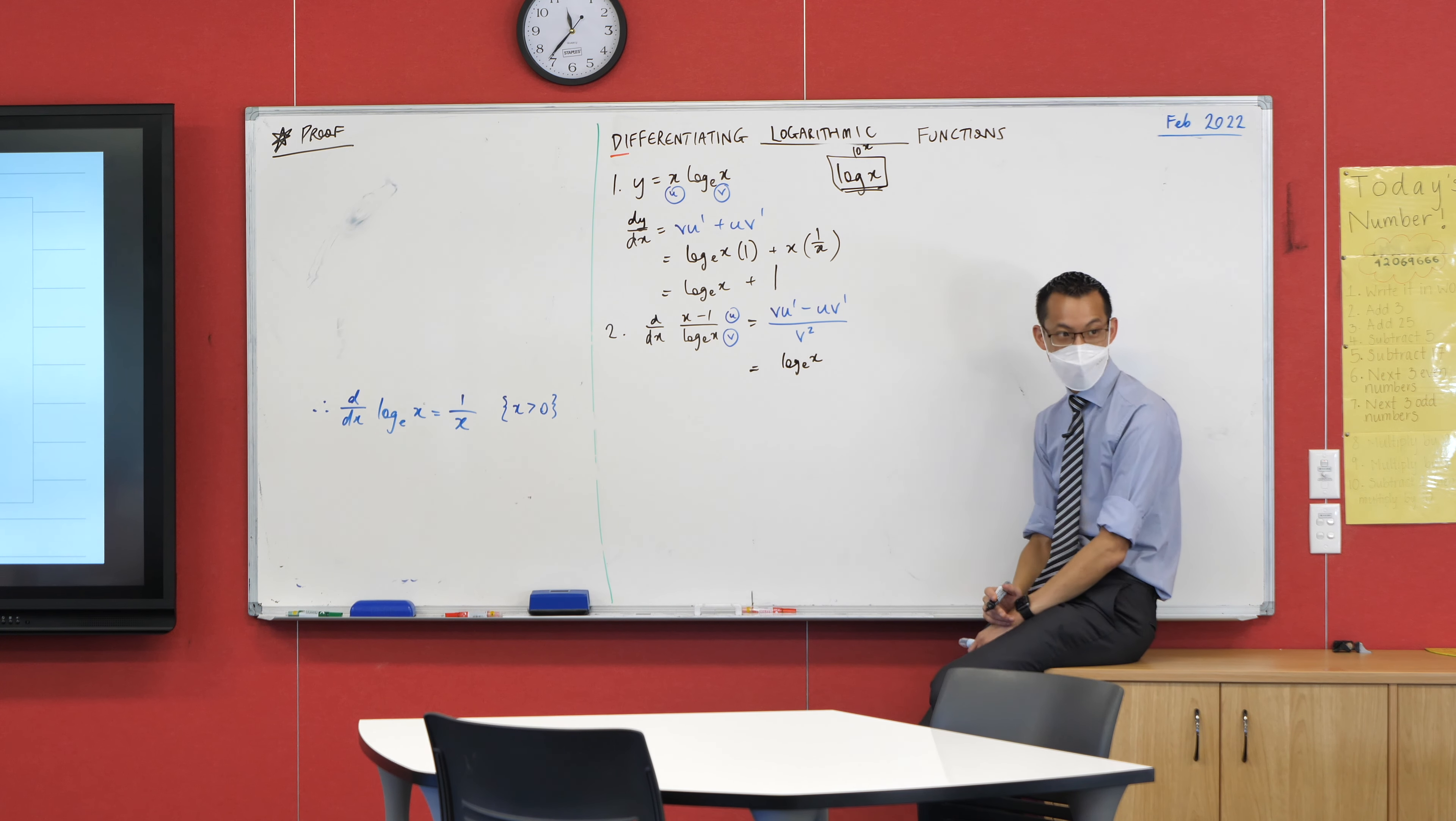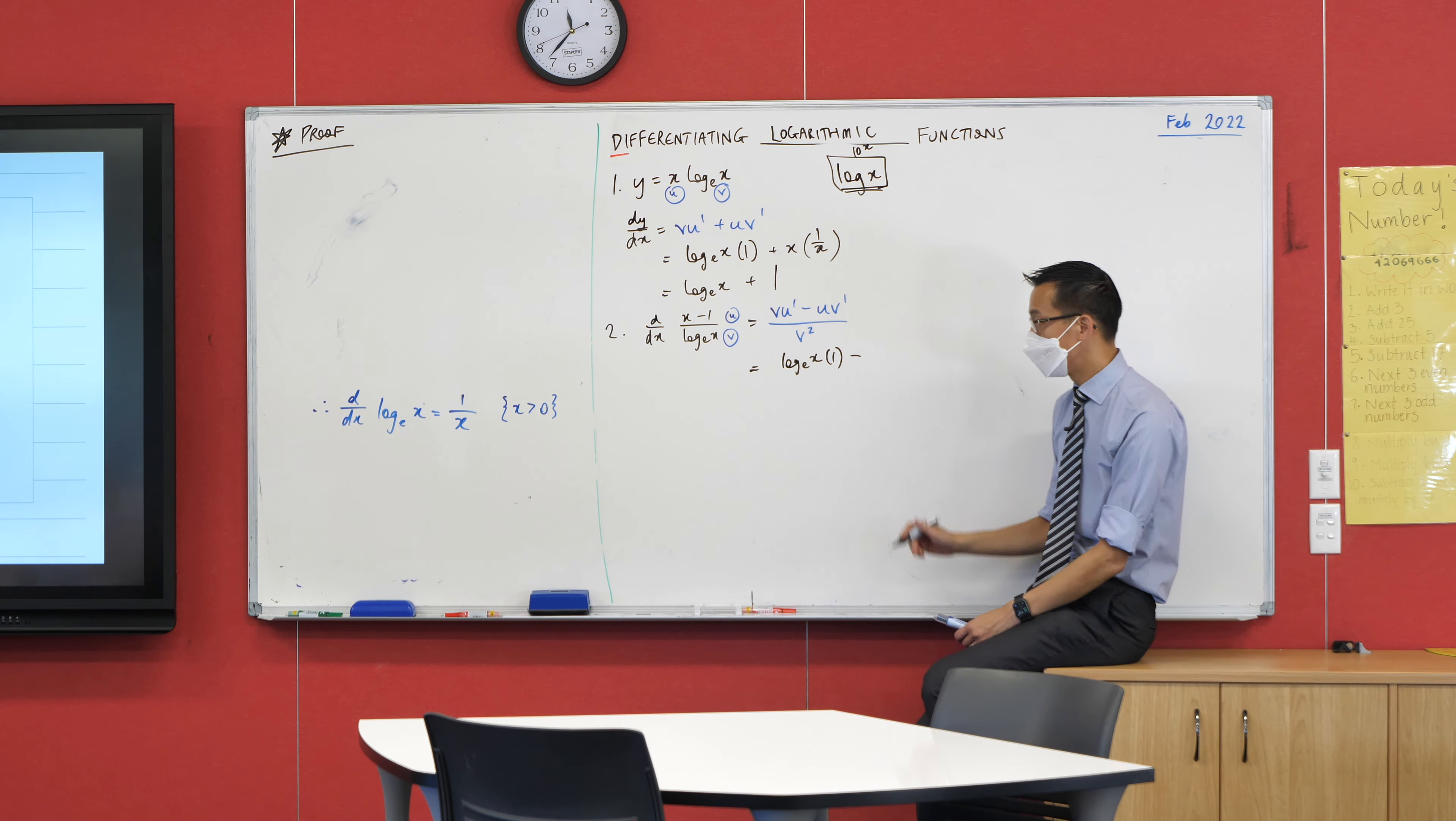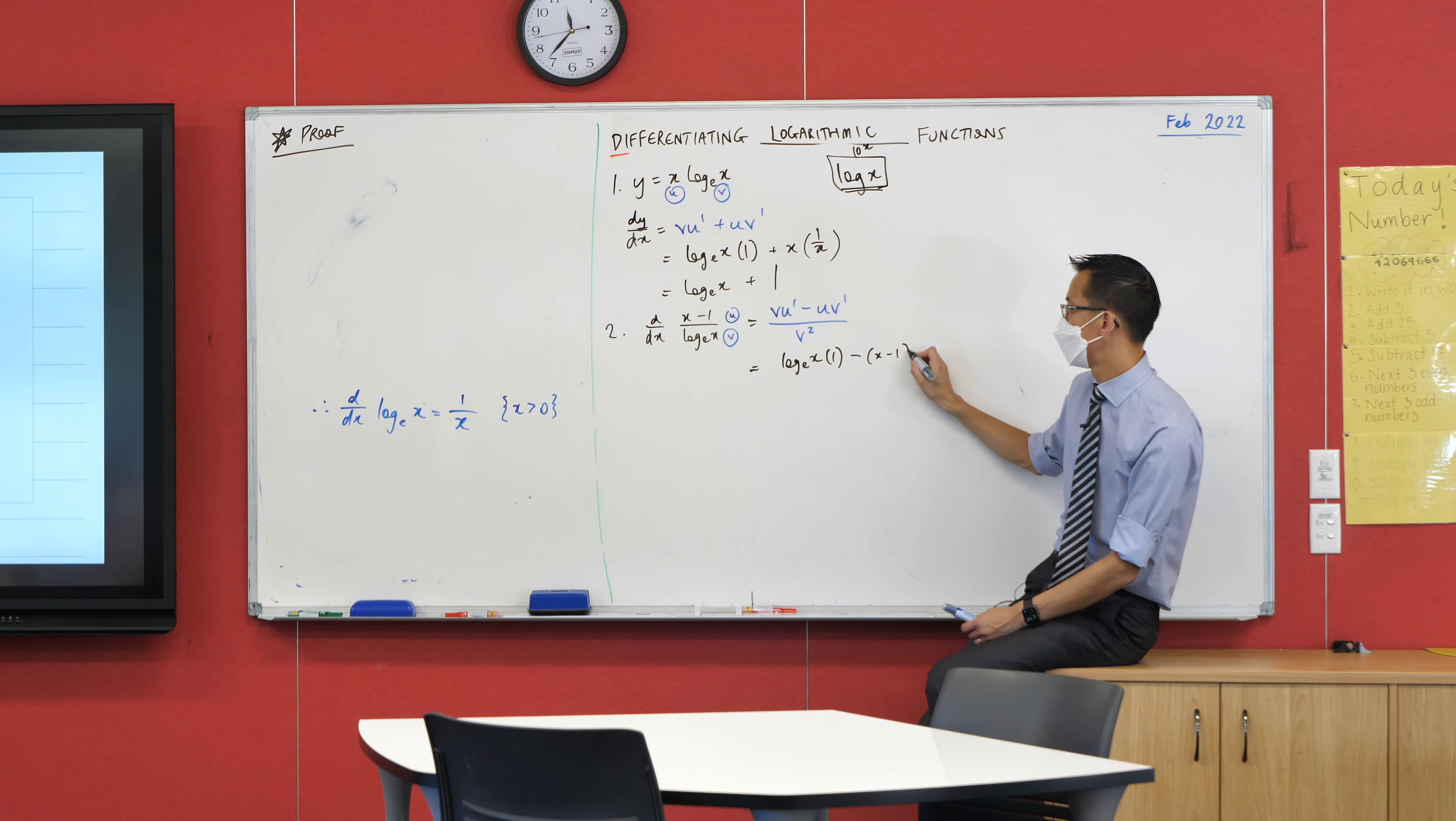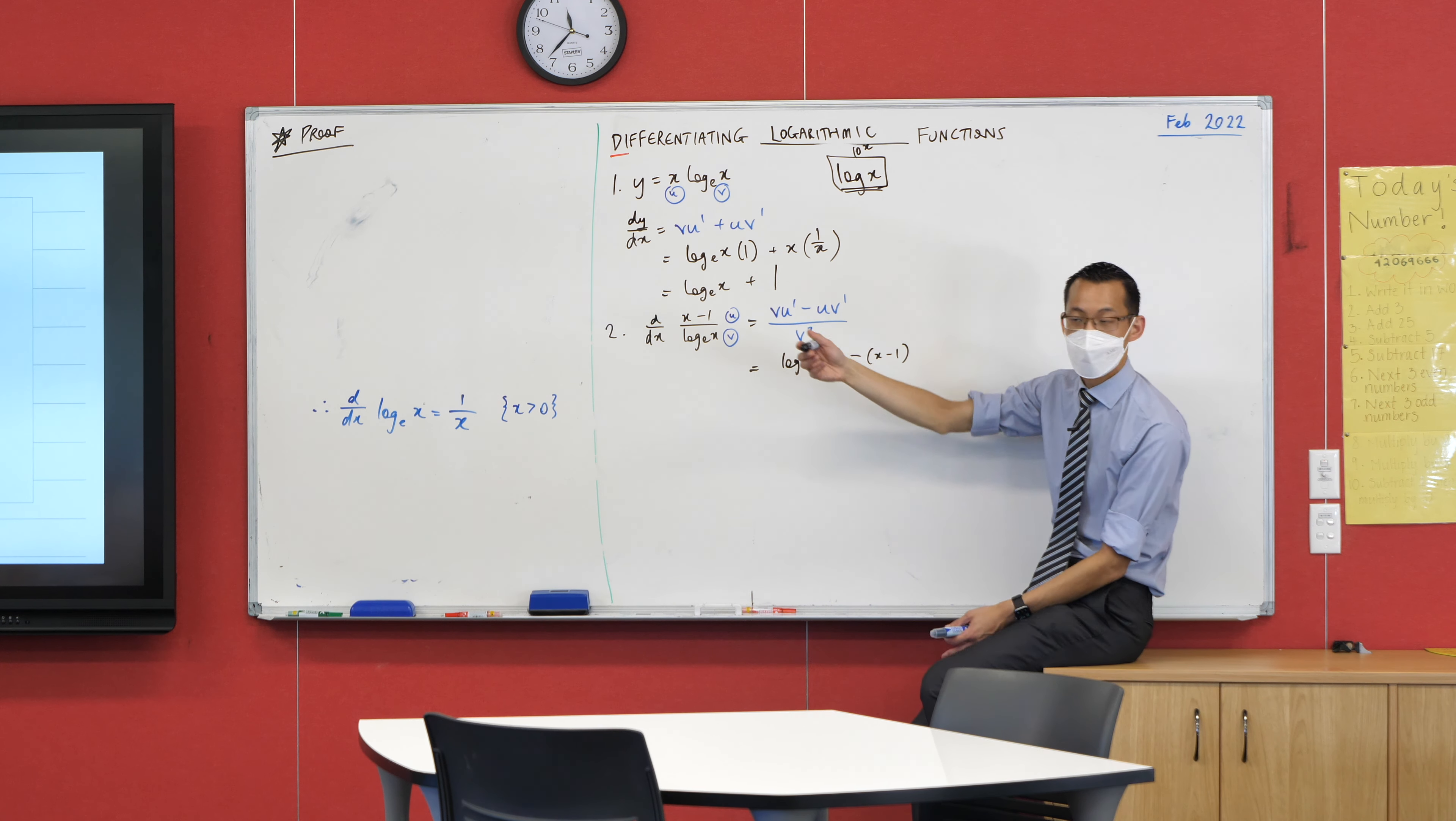What is U dash? 1. Just like before. That's nice. Here comes U, it's X minus 1. And then my V dash, which we've already seen and we're going to use again, it's 1 over X.